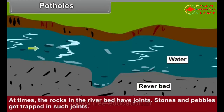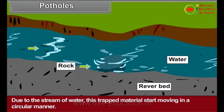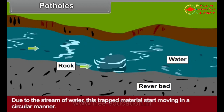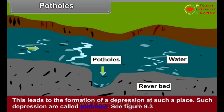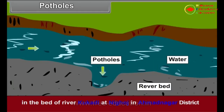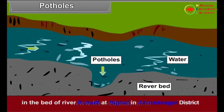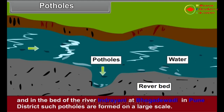Potholes: At times, the rocks in the river bed have joints. Stones and pebbles get trapped in such joints. Due to the stream of water, this trapped material starts moving in a circular manner. This leads to the formation of depressions at such places. Such depressions are called potholes. In the bed of river Kukdi at Nighoj in Ahmednagar district and in the bed of river Indrayani at Begdewadi in Pune district, such potholes are formed on a large scale.